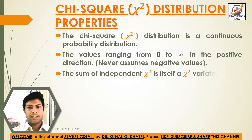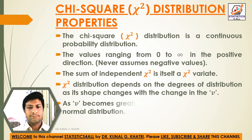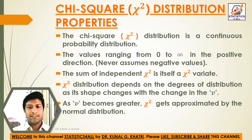The sum of independent chi-square variates is itself a chi-square variate. The chi-square distribution depends on the degrees of freedom, as its shape changes with the change in v. As v becomes greater, the chi-square distribution gets approximated by the normal distribution.